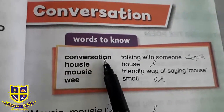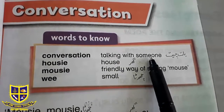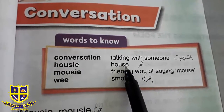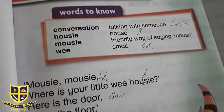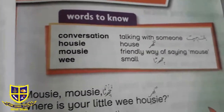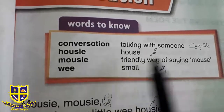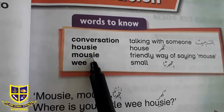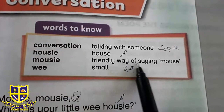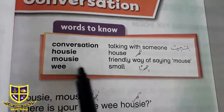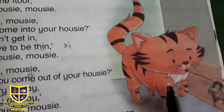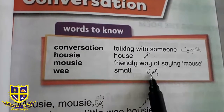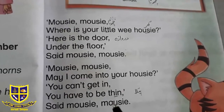Number one word: 'Conversation' means talking with someone — کسی سے بات کرنا، یعنی باتچیت. Second is 'Housey' — House کو جب ہم دوستانہ انداز میں کہتے ہیں تو Housey کہتے ہیں، یعنی گھر. اسی طرح 'Mousy' — یہ mouse کو دوستانہ انداز میں mousy کہا جاتا ہے، friendly way of saying mouse. اور 'Wee' کا مطلب ہے small یعنی چھوٹا۔ یہ ہو گئے words with meanings.